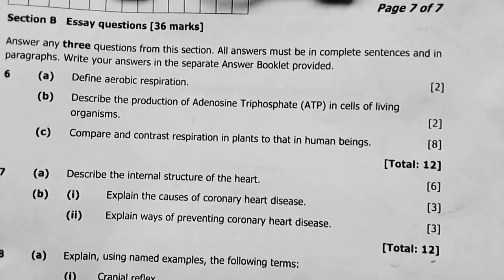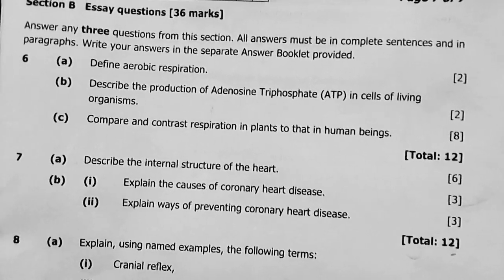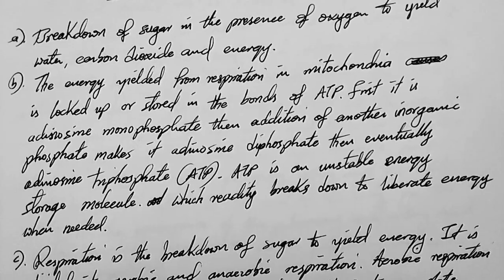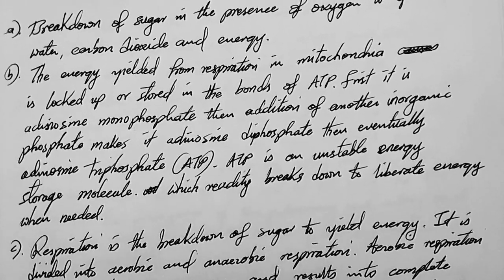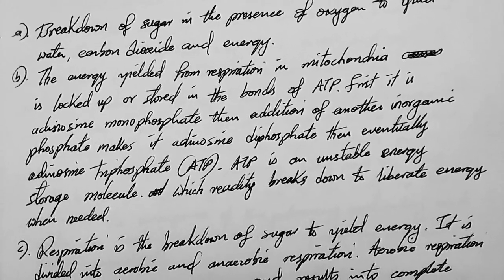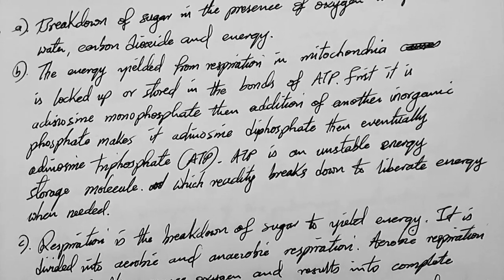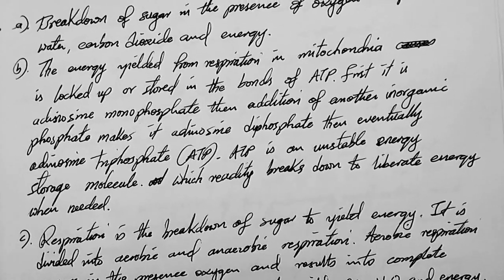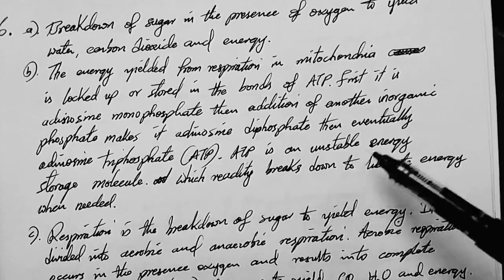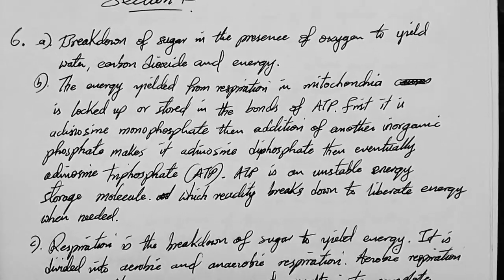Question 6b: describe the production of adenosine triphosphate in cells of living organisms. The energy yielded from respiration in mitochondria is locked up or stored in bonds of ATP. First it is adenosine monophosphate (AMP), then addition of another inorganic phosphate makes it adenosine diphosphate (ADP), then eventually adenosine triphosphate (ATP). ATP is an unstable energy storage molecule which readily breaks down to liberate energy when needed.